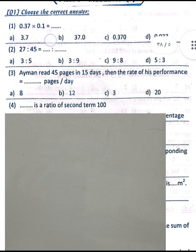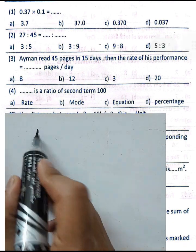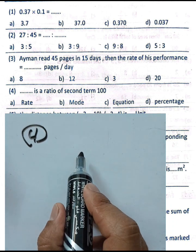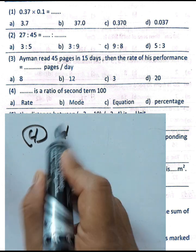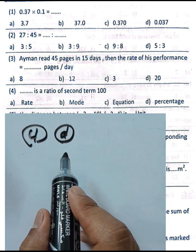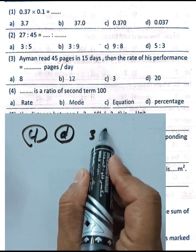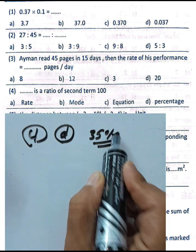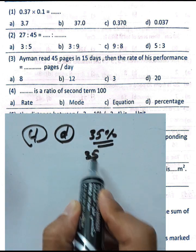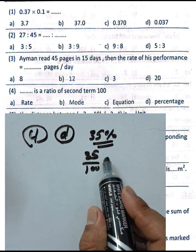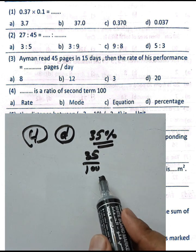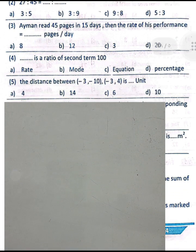Question number four: the ratio whose second term is 100 is called the percentage. Choose letter D. The percentage is a ratio whose second term is 100, such as 35% meaning 35 over 100.